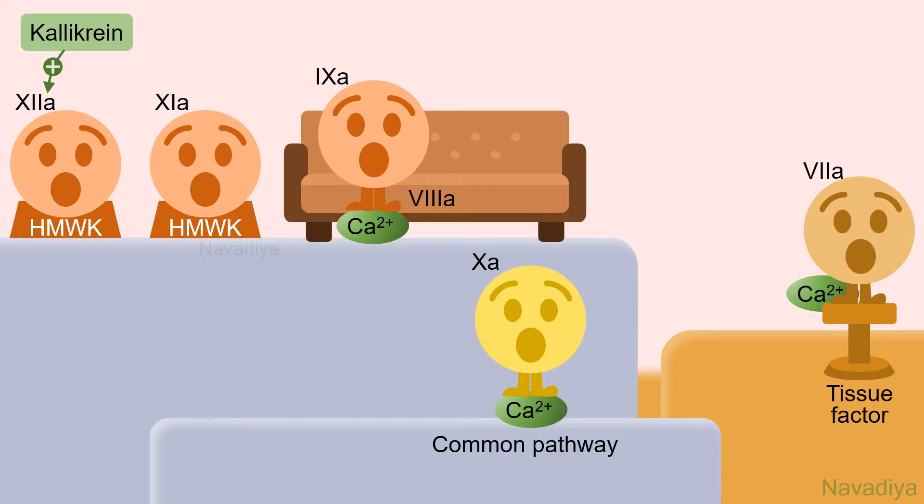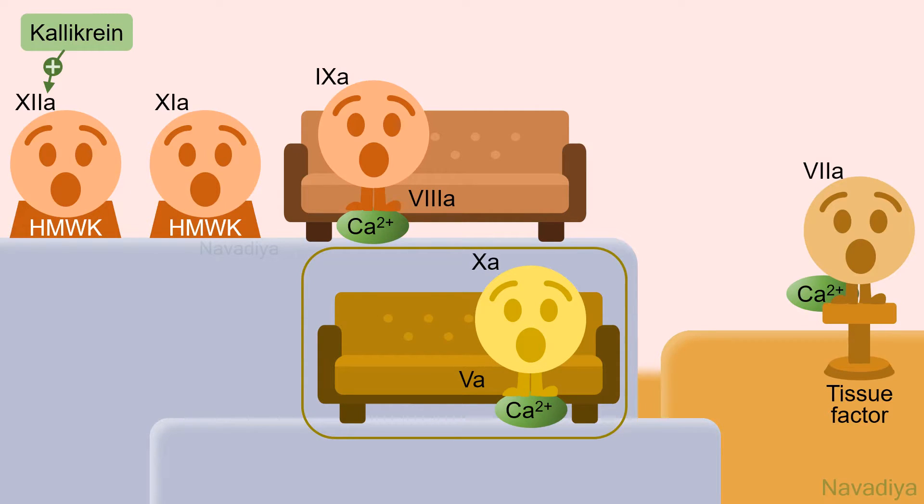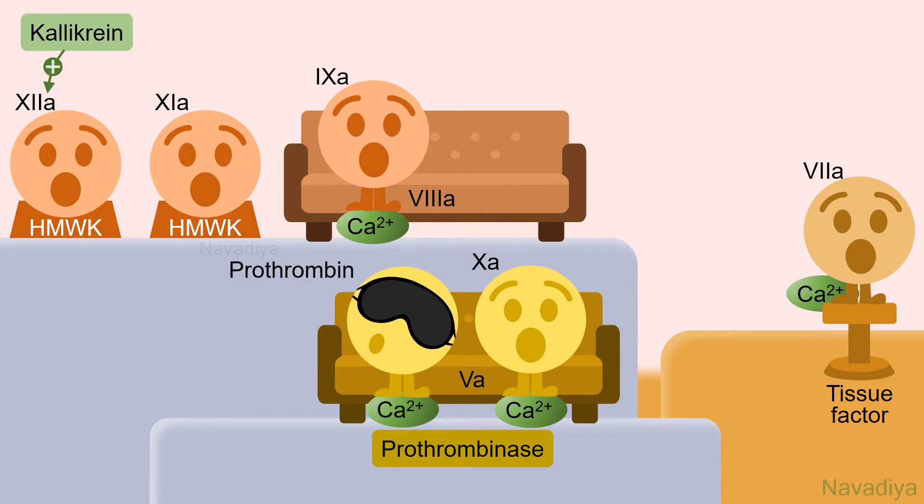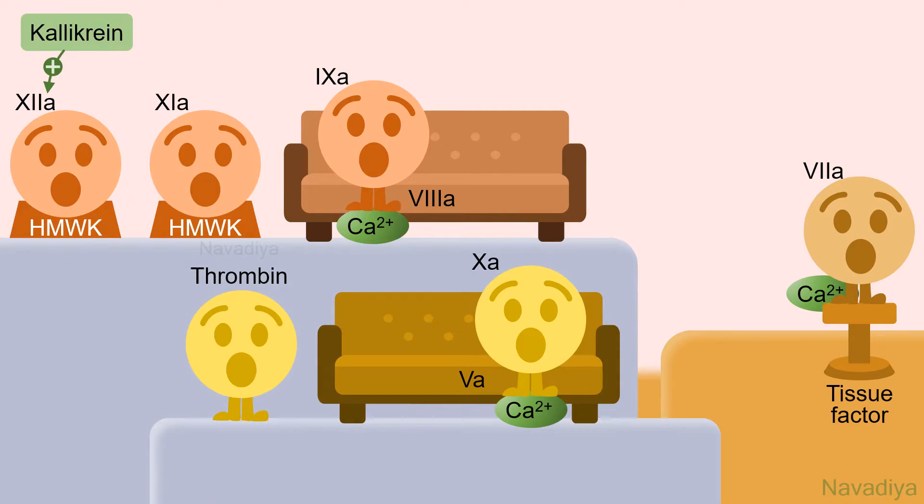So now let's move to the common pathway. Here factor 10 associates with factor 5a and forms one more complex along with calcium and phospholipid. It is called prothrombinase. And as per its name, it acts on inactive prothrombin and converts it into active thrombin.